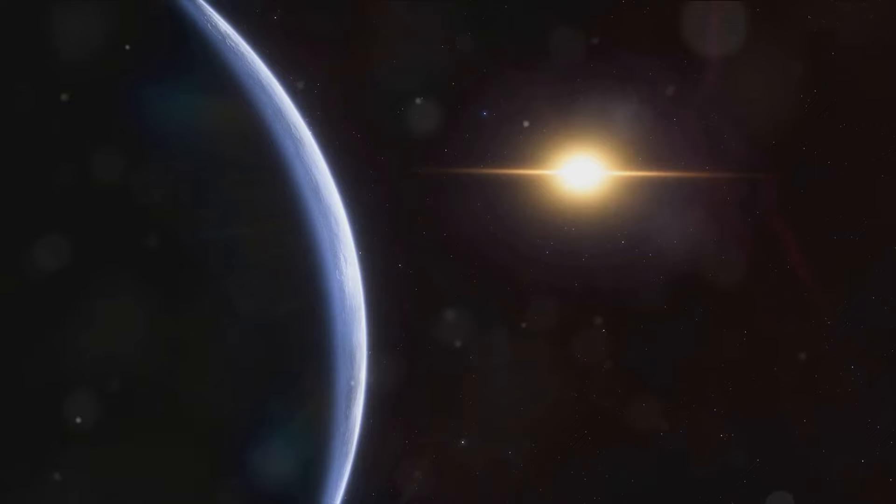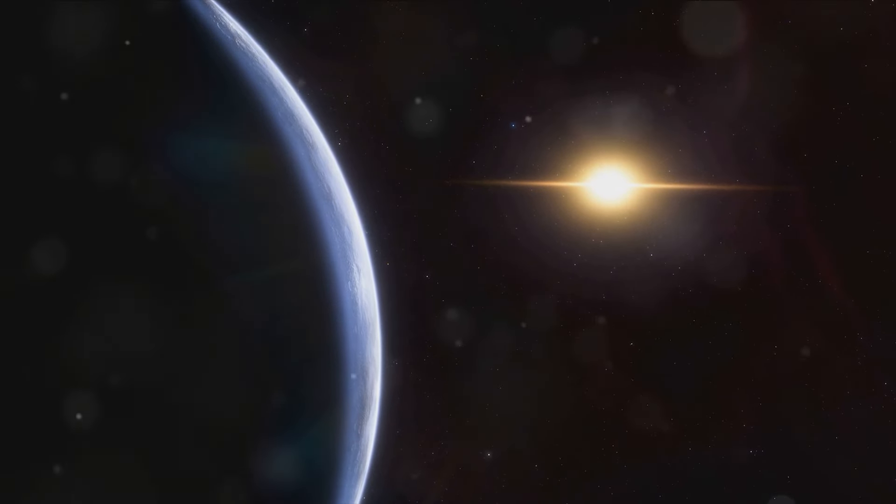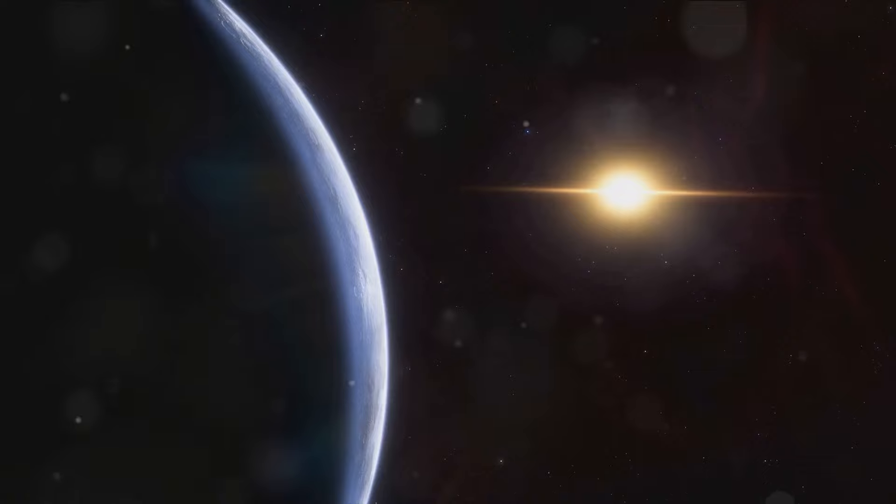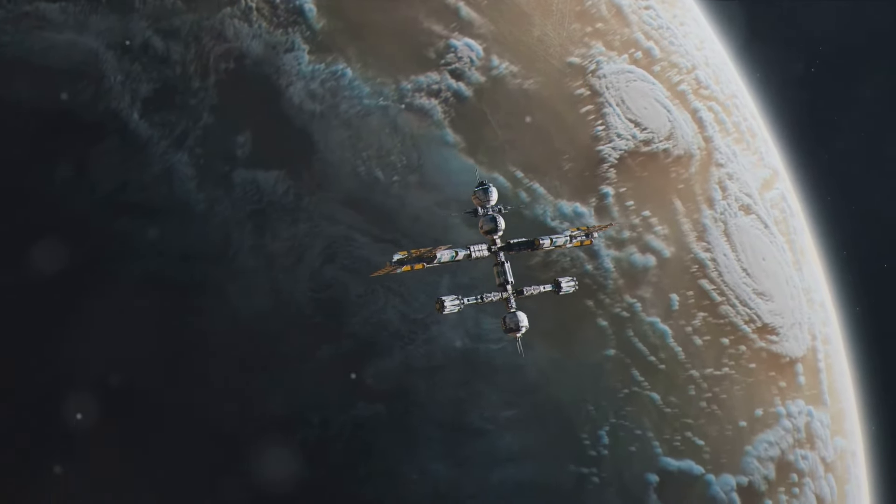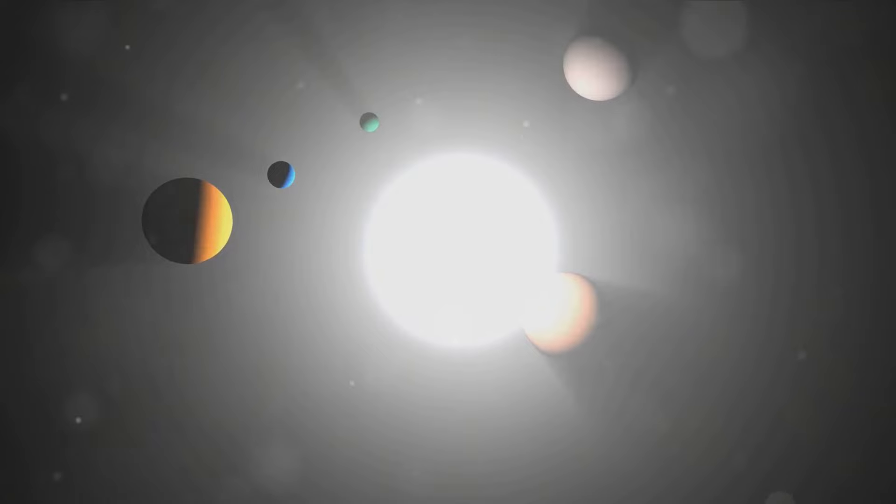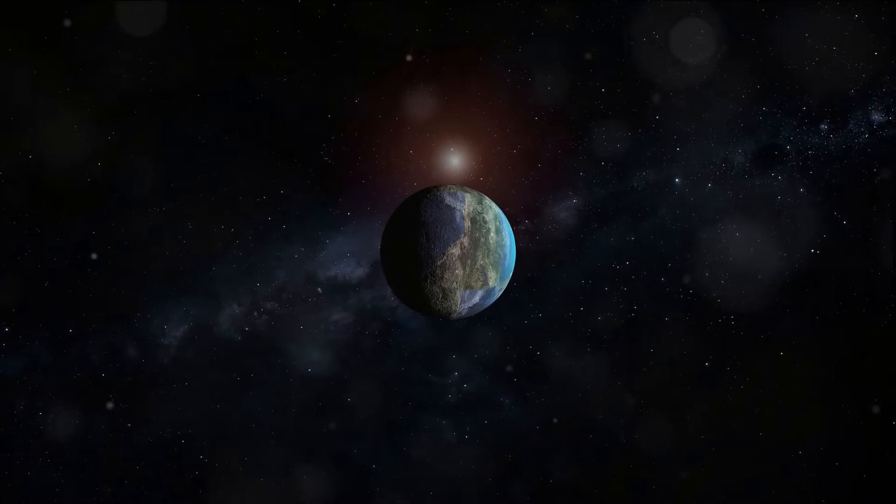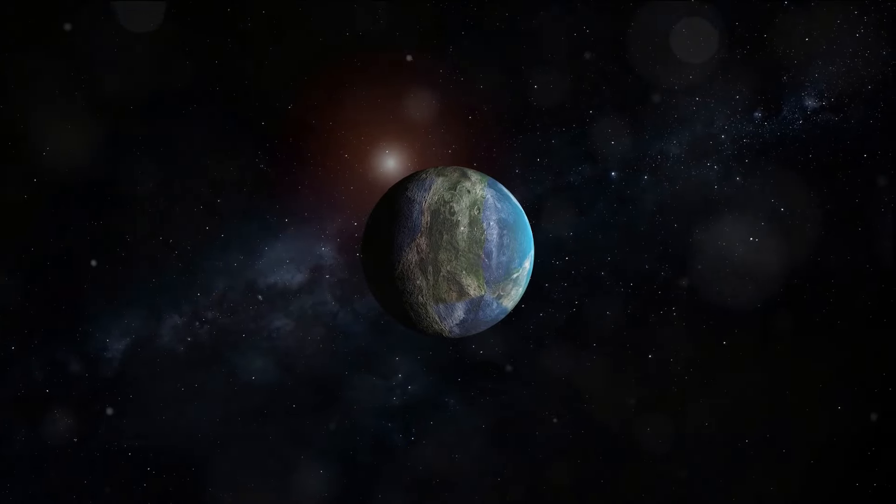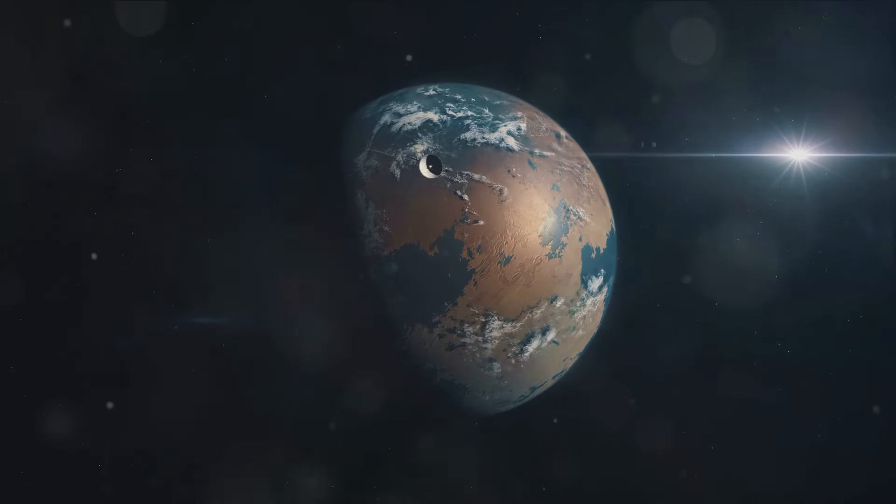The TRAPPIST-1 system is a remarkable cosmic family, a clutch of worlds that could potentially harbor life as we know it. Each planet, each world, is a new opportunity, a new possibility. They represent uncharted territories, new frontiers for us to explore. In the grand cosmic scheme of things, the TRAPPIST-1 system is our neighbor. And within this neighborhood, we might just find our next cosmic home. The TRAPPIST-1 system offers opportunities for scientific discoveries and the chance to understand our universe better. It's a system symbolizing hope and opportunities, a system that holds the promise of new beginnings.